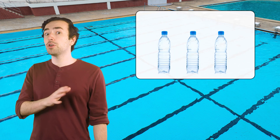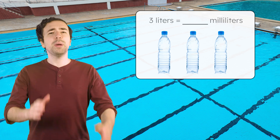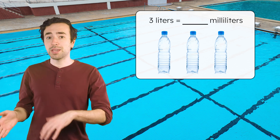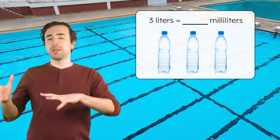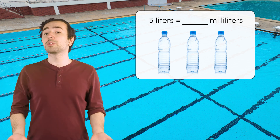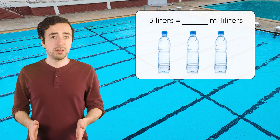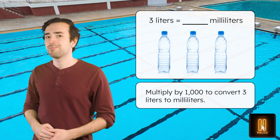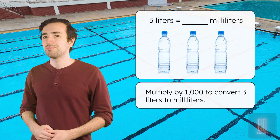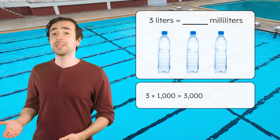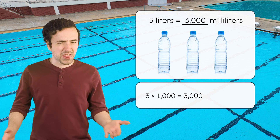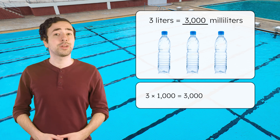My coach recommended drinking three liters of water per day during training. How many milliliters are in three liters? We're converting from liters to milliliters — a larger unit to a smaller unit — so we multiply by 1,000. Pause here to solve in your guided notes. Three times 1,000 equals 3,000. That means I need to drink 3,000 milliliters of water each day to stay hydrated.